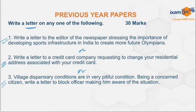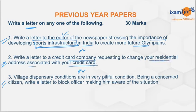The first letter option was: write a letter to the editor of a newspaper stressing the importance of developing sports infrastructure in India to create more future Olympians. Second: write a letter to a credit card company requesting to change your residential address associated with your credit card. Third: village dispensary conditions are in a very pitiful condition — being a concerned citizen, write a letter to your block officer making him aware of the situation. That was the paper for 2021, and you should try to complete all three questions within 90 minutes.